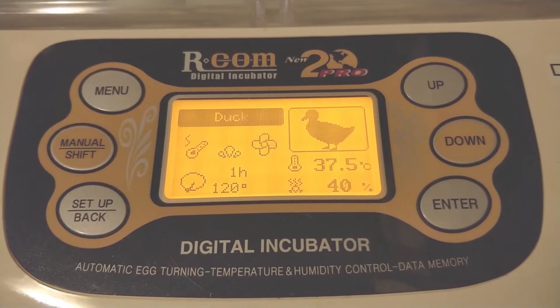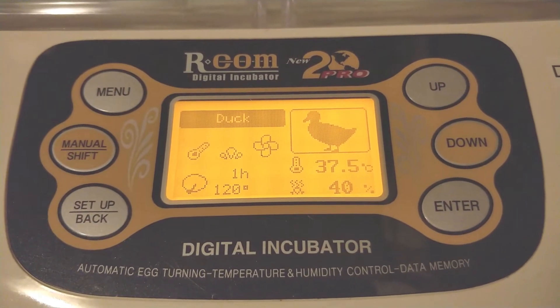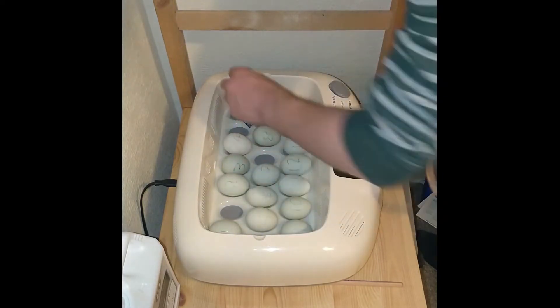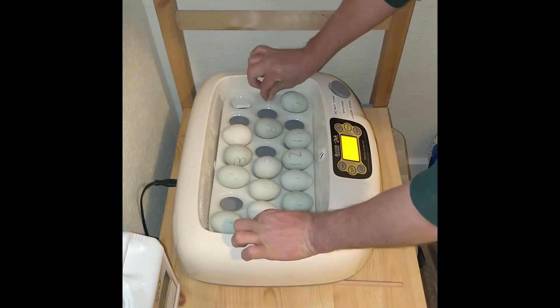It's day seven on the hatching project, 21 days to go. Humidity and temperature are fine. Now let's take the eggs out and go and candle them and see how they're developing.